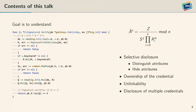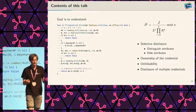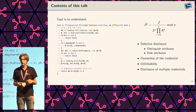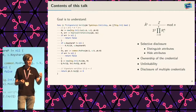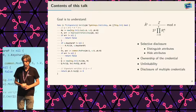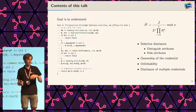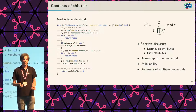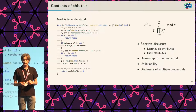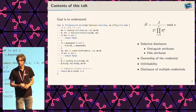A small table of contents for the remainder of this talk. First, we'll talk about selective disclosure — how you can distinguish the various attributes within the formula and then hide the attributes that are not relevant to a particular transaction. Next, we'll talk about ownership of the credential and how to really bind it to the person. Then we'll talk about unlinkability — how we can transfer that property from the paper case to our digital setting. Finally, we'll talk about how you can combine all of that to achieve disclosure of multiple credentials out of your IRMA wallet.